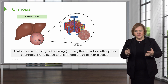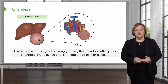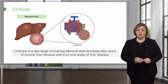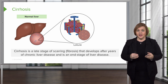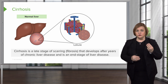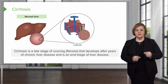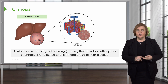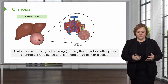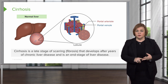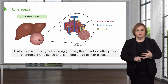Well, first of all it's shaped like a hexagon, and there are six units around the outside called portal triads. They're called triads because there are three tubes in each one of those six portal triads — one green one, one red one, and one blue one. We've colored them so you can see that one brings arterial blood, one carries venous blood, and the green carries the bile.